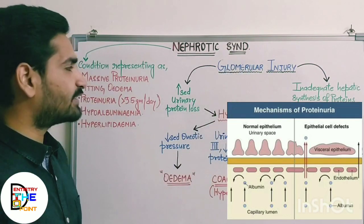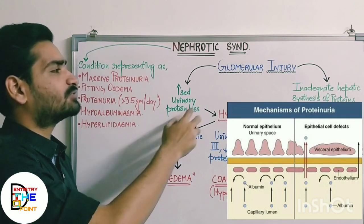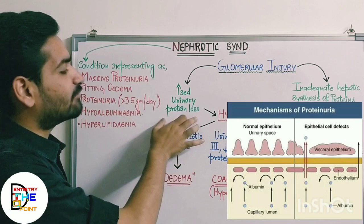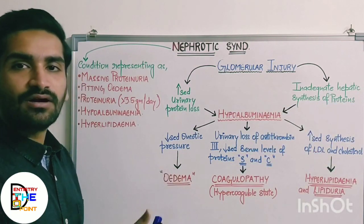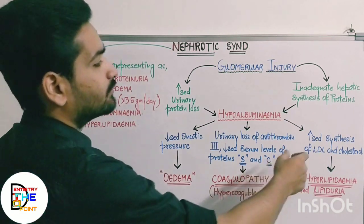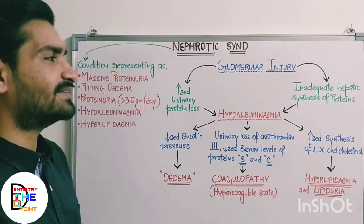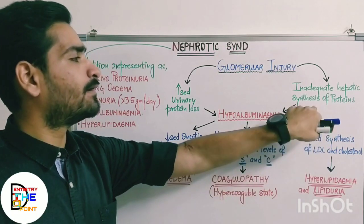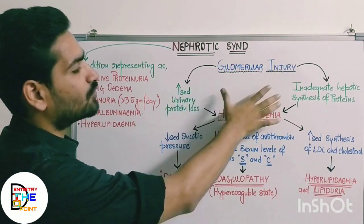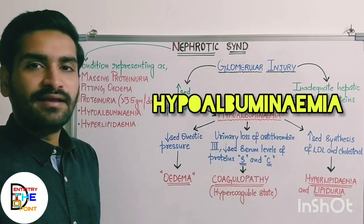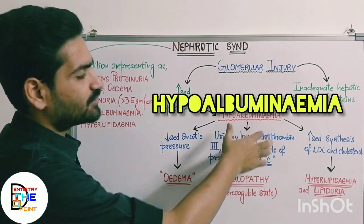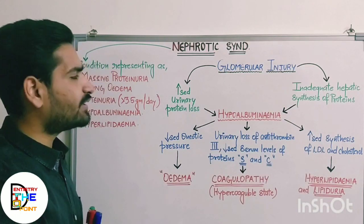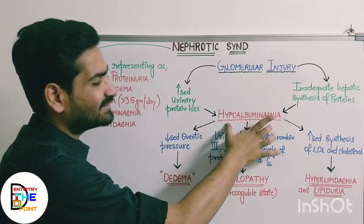Glomerular injury leads to two things. Firstly, increased urinary protein loss — proteins are excreted in the blood filtrate into the urine. Secondly, there will be inadequate hepatic synthesis of proteins, meaning the liver will not sufficiently produce proteins to meet the demands of the body. Due to both these conditions, there will be hypoalbuminemia — that is, decreased concentration of proteins or albumin in the body.